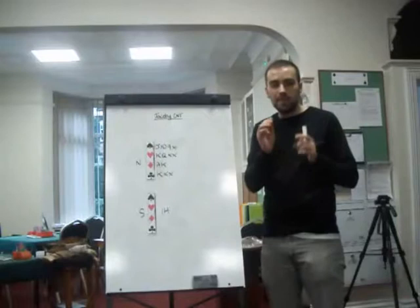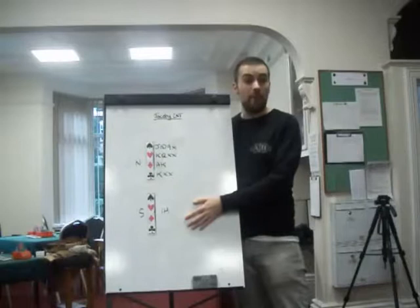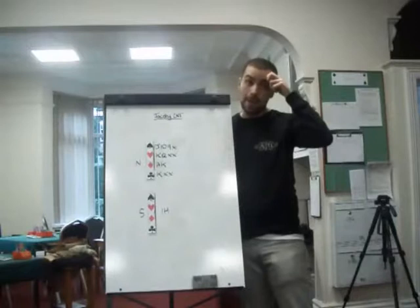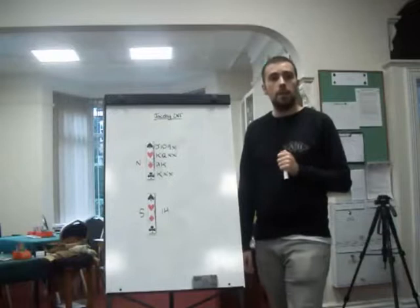So whenever you bid the same suit as a responder, it is non-forcing. There are very select times when it is forcing, when you've game forced earlier or something. But if we bid two hearts or three hearts, our partner could pass, which would obviously be very, very bad. Because if we bid two hearts or three hearts, our partner passing is an incredibly bad thing for us given that we imagine we can make game.